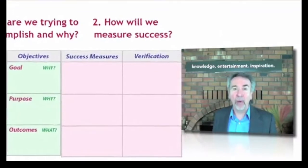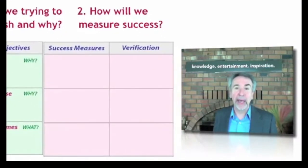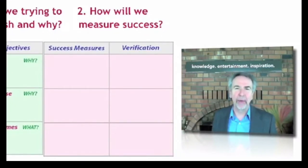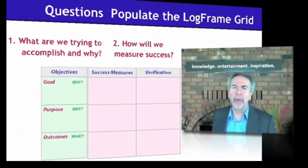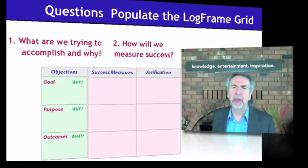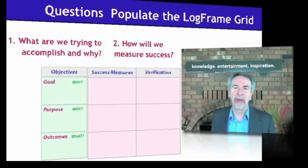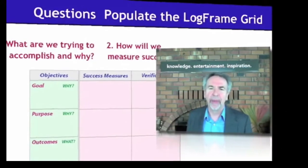We will then ask: how will we measure success at each of these levels? How will we know in advance that we've achieved these objectives? We'll come up with measures — quantity, quality, time, cost, customer — as well as verifications, the means of determining the success measures.